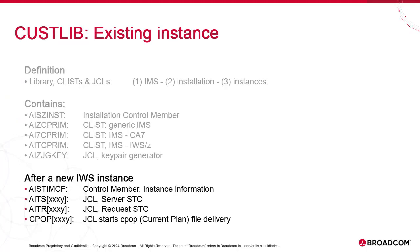The Custlib library has been appended with items dedicated to the management of the instance. The important ones are as follows: a control member called AIST-IMCF, which has specific information about each instance; a JCL named AIST followed by four characters based on the AAI ID and IWS subsystem, which starts the server STC; and AITR, which starts the request STC. It also has CPOP followed by the same four characters based on the IWS subsystem and AAI ID, which initiates the current plan file delivery.